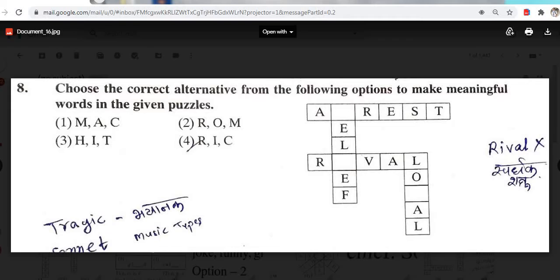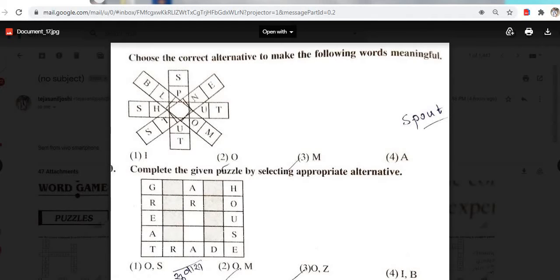Read this question. Choose the correct alternative from the following option to make meaningful words in the given puzzle. B-L-O-O-M. Bloom. S-T-O-N-E. Stone. Then stout and spout. Option number 2.